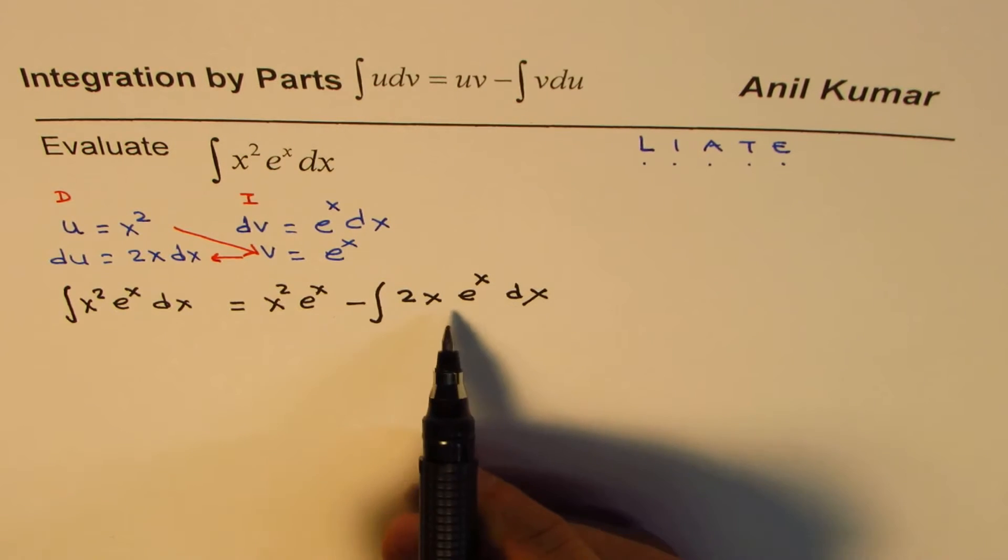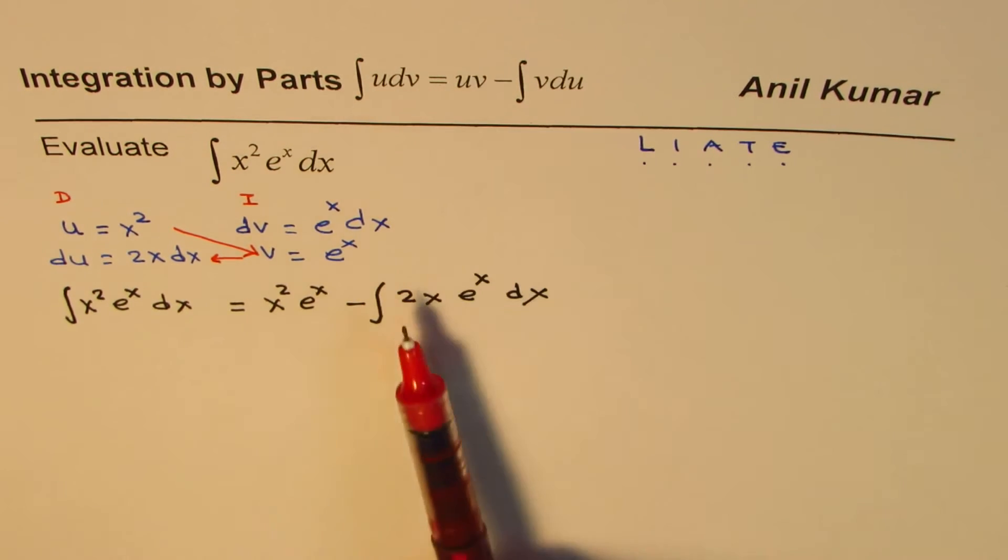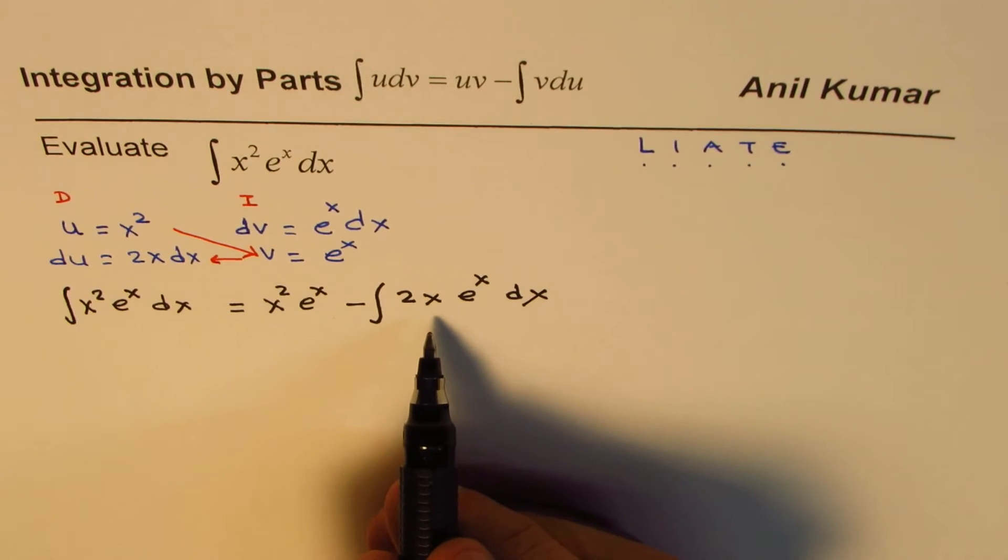Again we have product of two functions as you can see, so we may have to again apply the integration by parts. This is what I meant by saying that at times you may have to repeat this process of integration by parts, but ensure that as you apply this again and again you get simpler and simpler integral part. That's the whole idea.